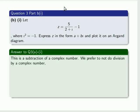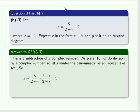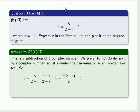Okay, now this is a subtraction of a complex number. We prefer not to do division by a complex number, so let's render the denominator as an integer. Like so. So we multiply above and below by the denominator, which gives us that. And, happily enough,